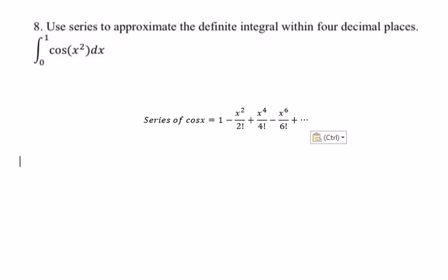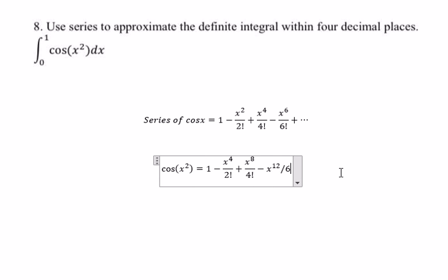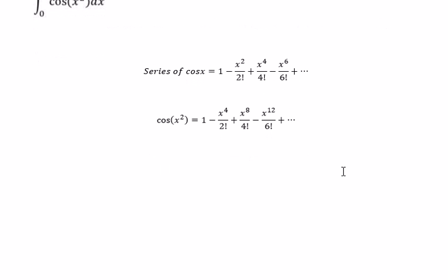If we want to find cosine of x squared, we just put x squared in here and we get 1 minus x to the power of 4 over 2 factorial, minus x to the power of 8 over 4 factorial, and the last one minus x to the power of 12 over 6 factorial. Next we put the integral on both sides.